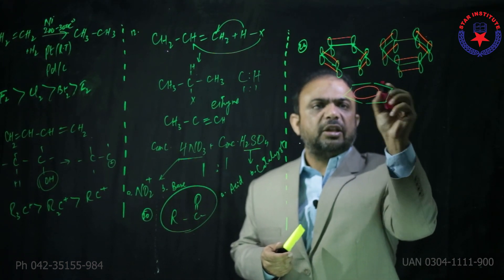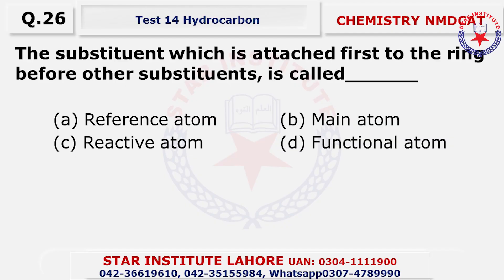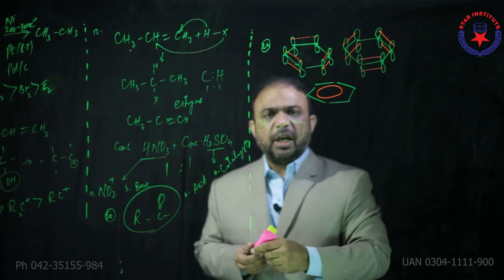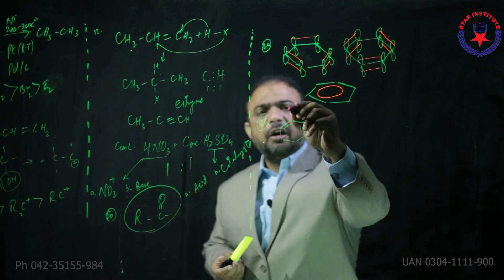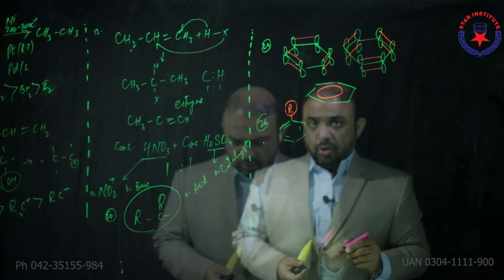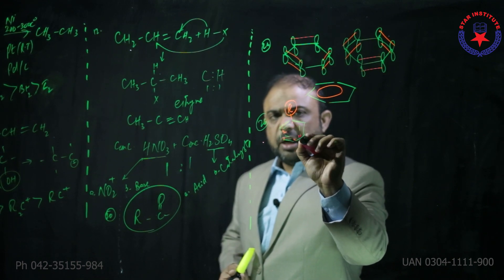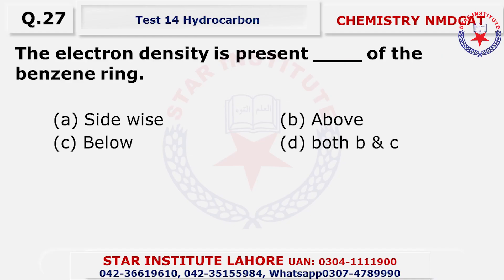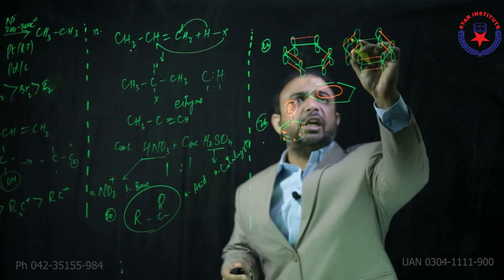The delocalization is shown using a semi-circle inside the benzene ring. Question 26: the substituent which is attached first to the benzene ring — the first substituent you attach is called the reference atom, because numbering starts from that position. Therefore, it is considered the reference for numbering.